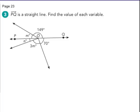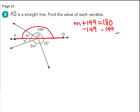PQ is a straight line. Find the value of each variable. Well, there's my straight line. So M plus 149 must equal 180. Those are supplements. So how to solve for M? M plus 149 equaling 180. Subtracting 149 from both sides, I get M is equal to 31. So I know M. So if M is 31, 3 times 31 down here is going to give me 93. So I know this angle, which is an obtuse angle, is 93.